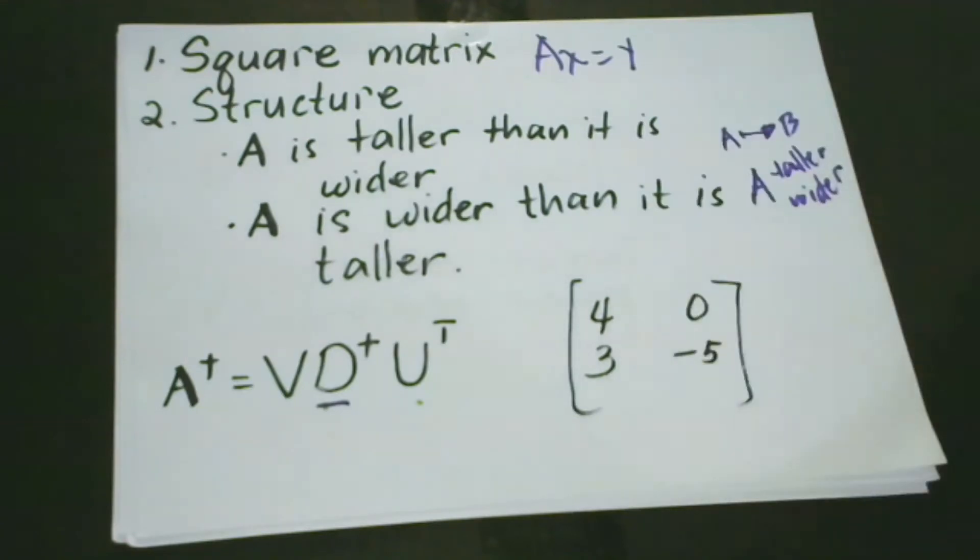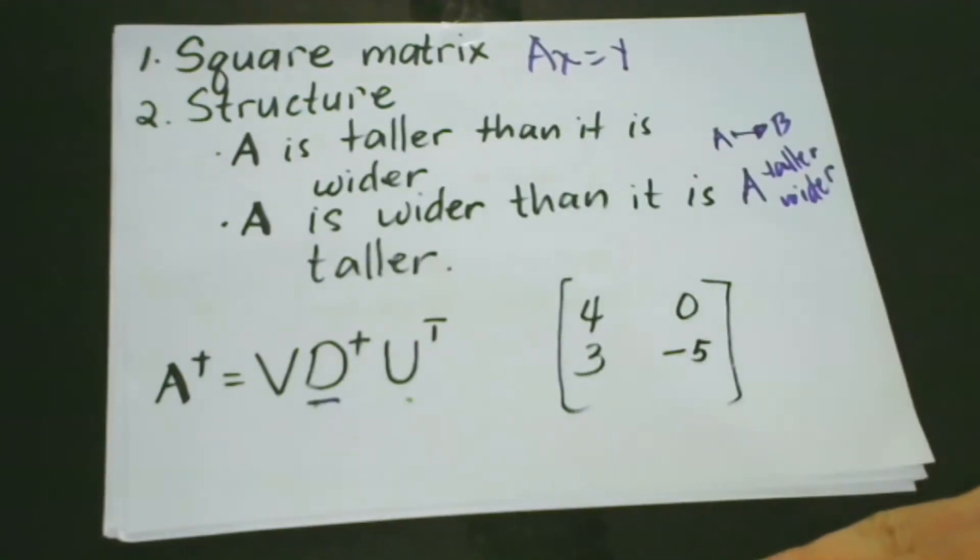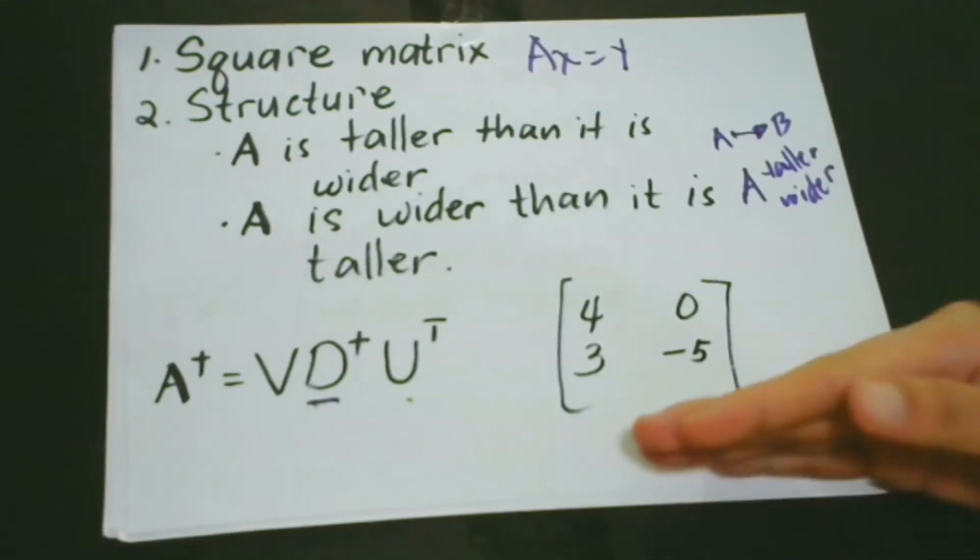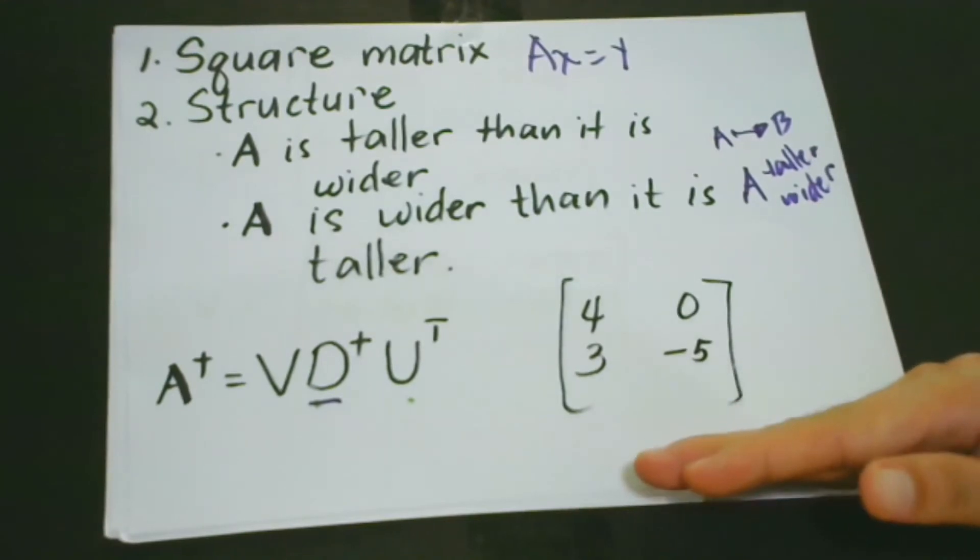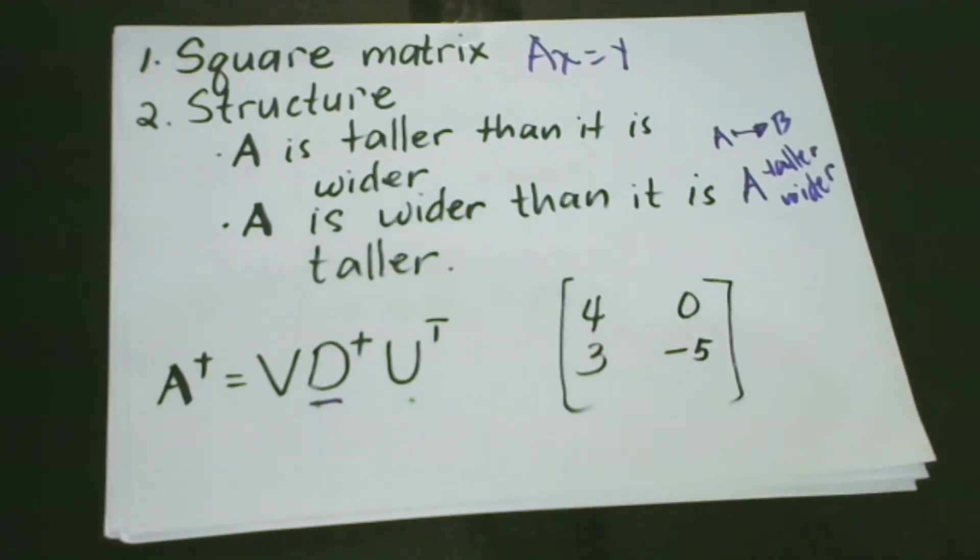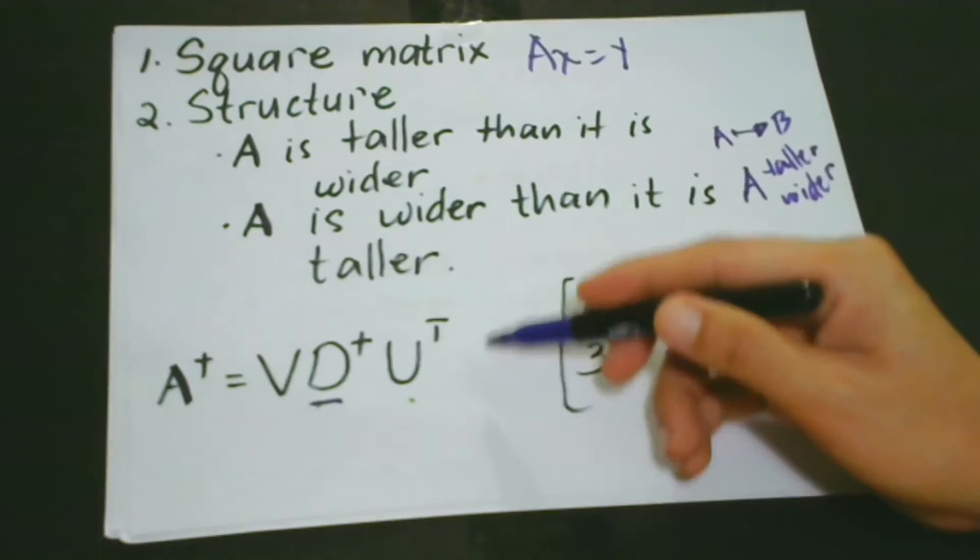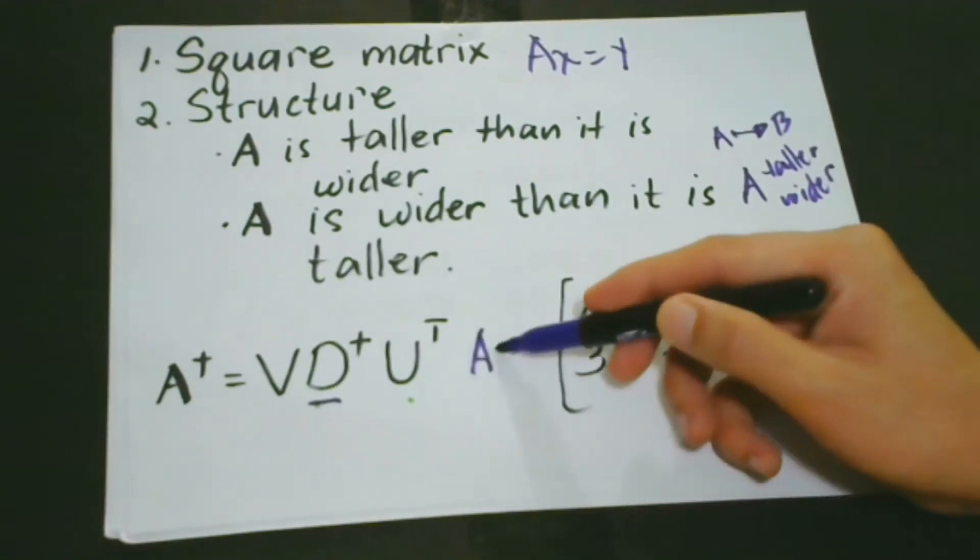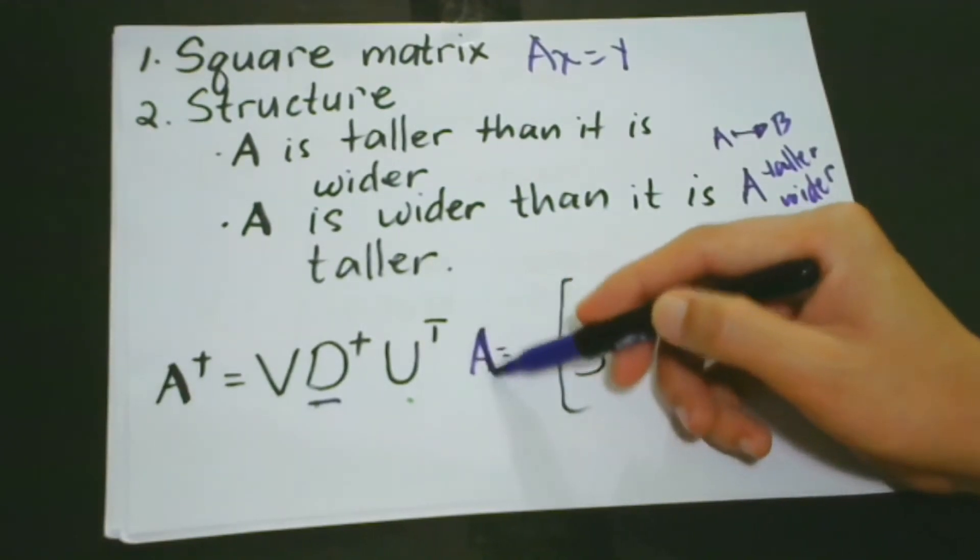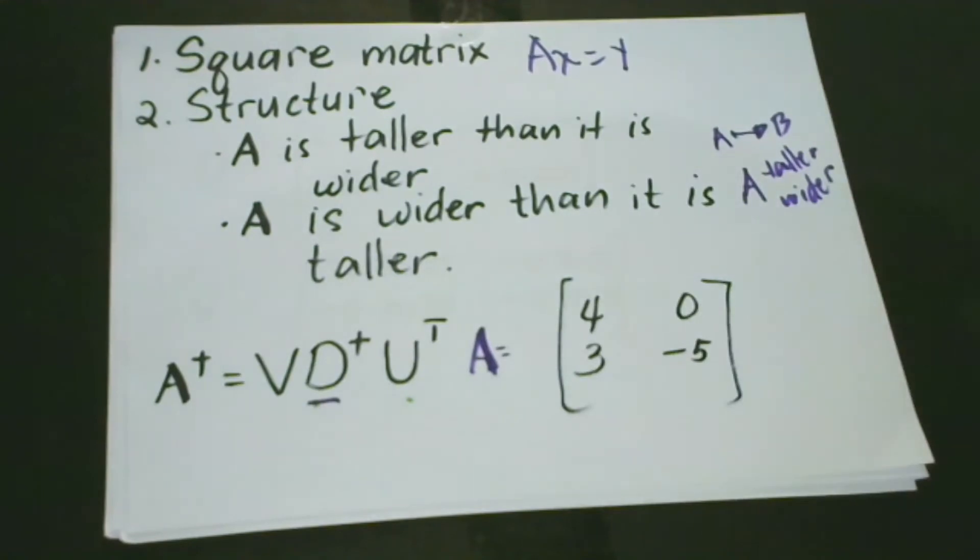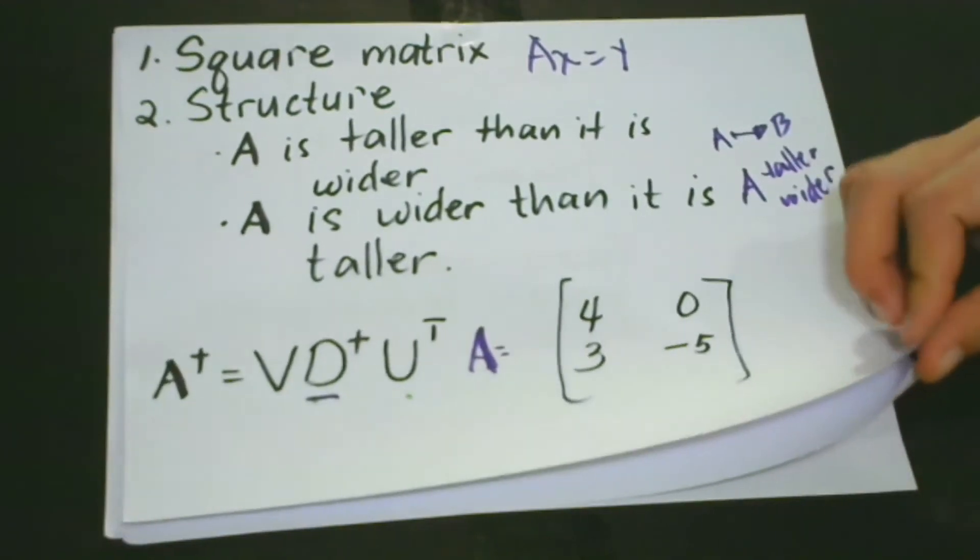Our case is that we are going to find the Moore-Penrose pseudo-inverse of this matrix. So let's name this matrix as matrix A. So we have 4, 3, 0, negative 5. To do this, we are going to follow the different steps.